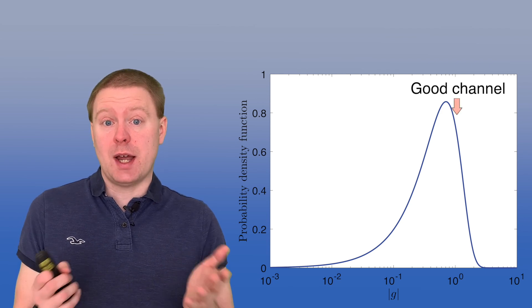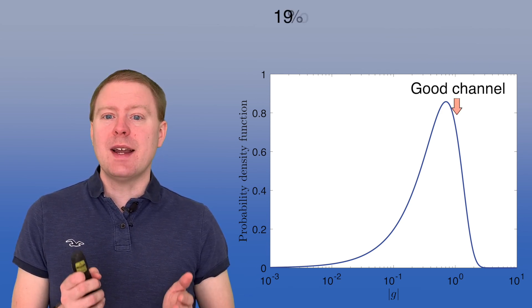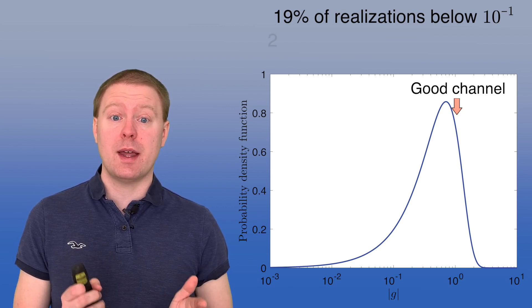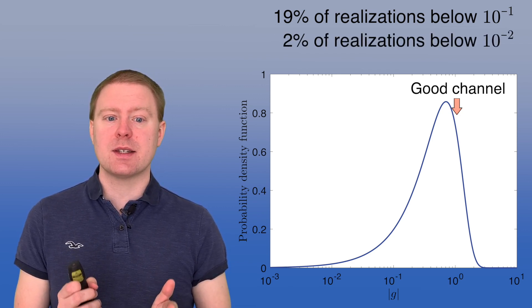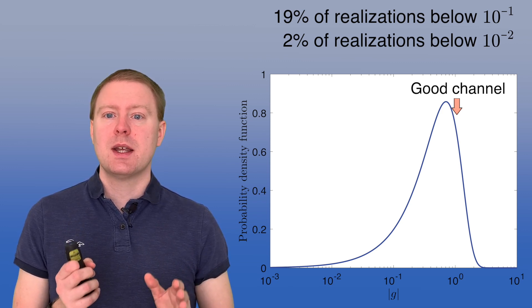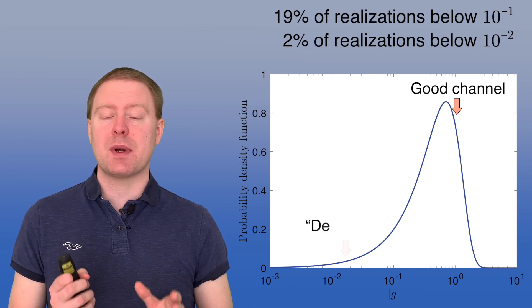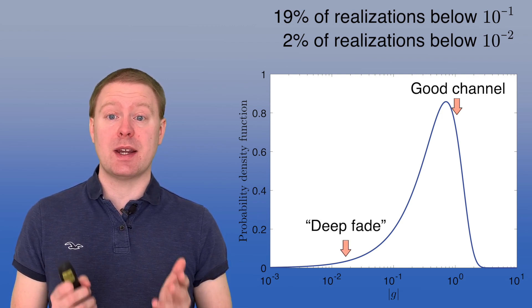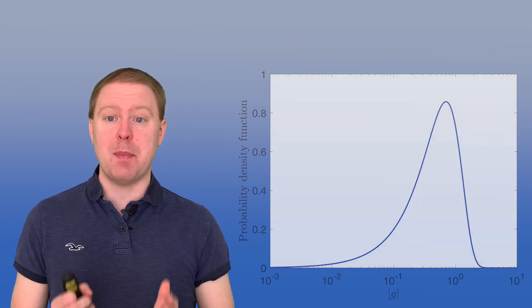And that is when we have a good channel. It's close to its mean value. But in 19% of the cases, we have something that is below 10 to the power of -1. And 2% of the cases, we have something below 10 to the power of -2. So sometimes we have a bad channel, and then we say that we are in deep fade. And that is something that we need to deal with whenever we have Rayleigh fading channels. Sometimes it's bad.